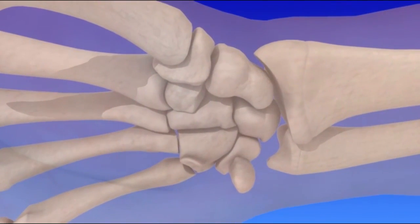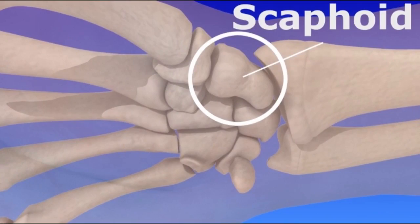The scaphoid is a small bone located on the thumb side of the hand. It is the most frequently broken bone in the wrist.